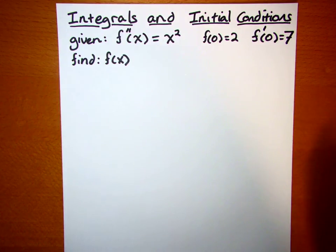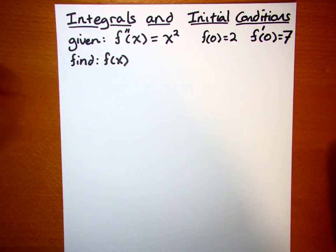Okay, here's an integration question with initial conditions. Given f double prime of x equals x squared, f of 0 equals 2, and f prime of 0 equals 7, find f of x.